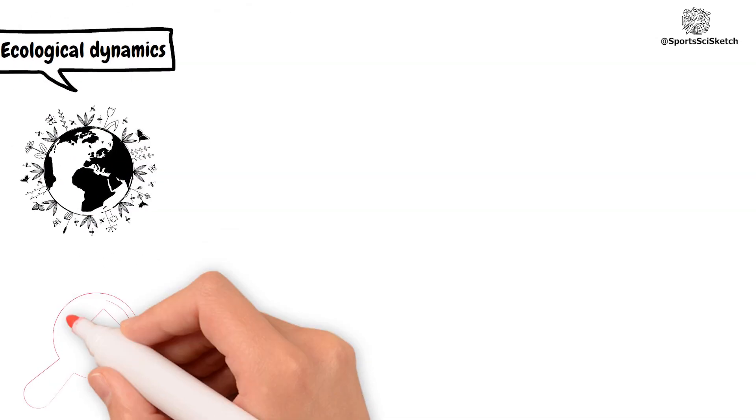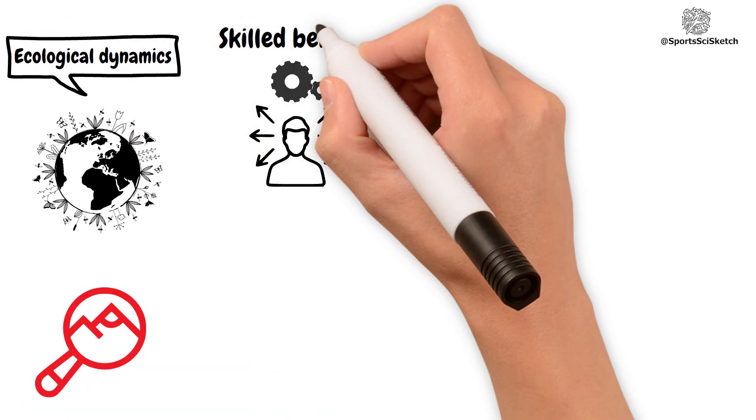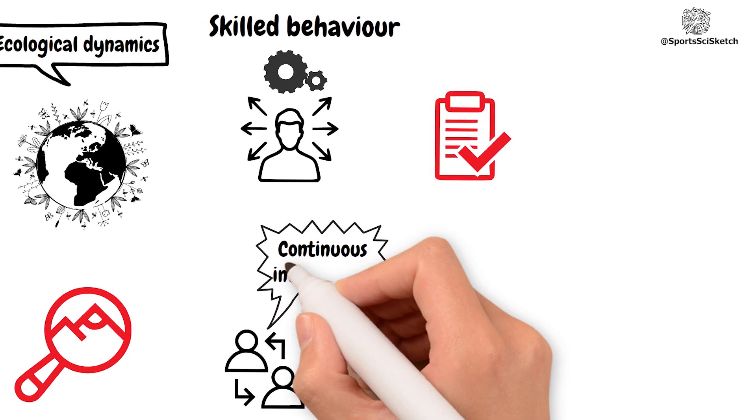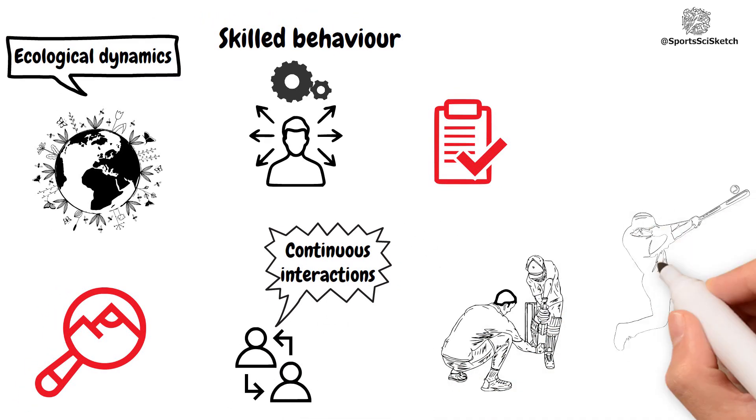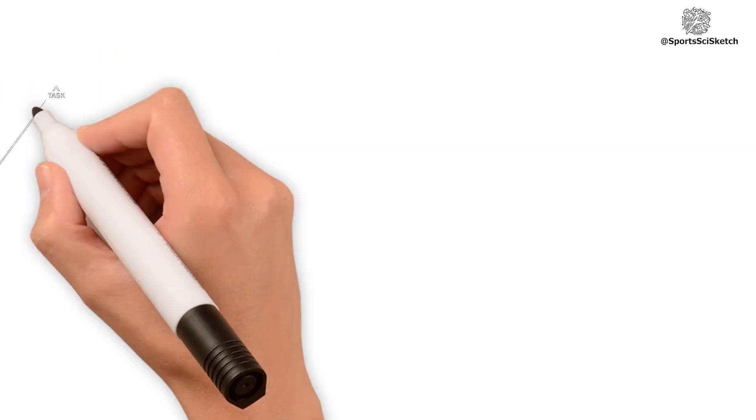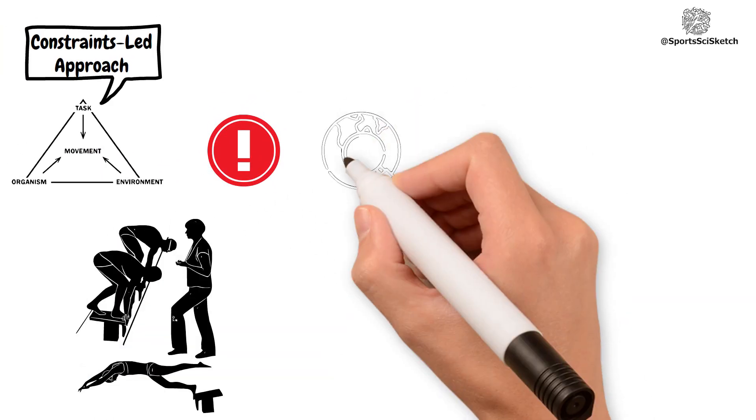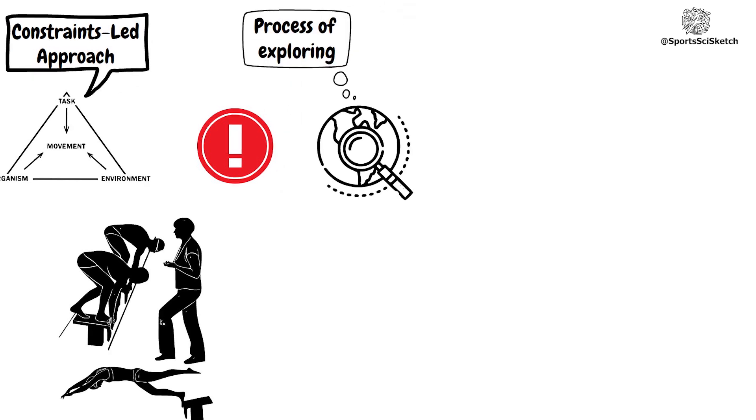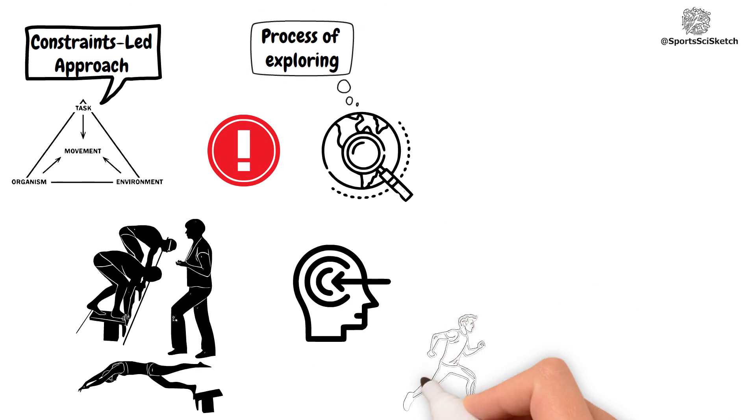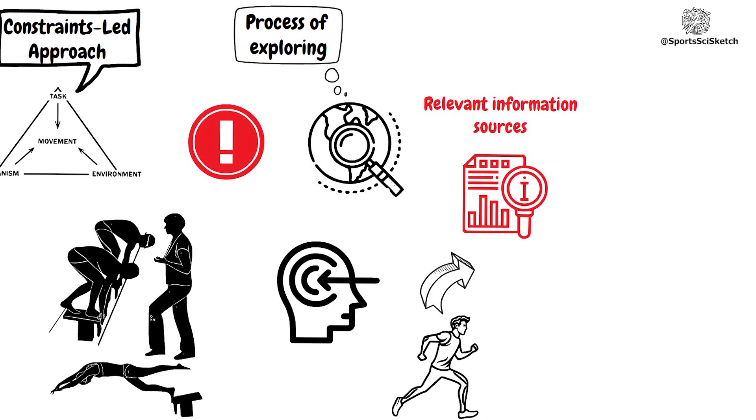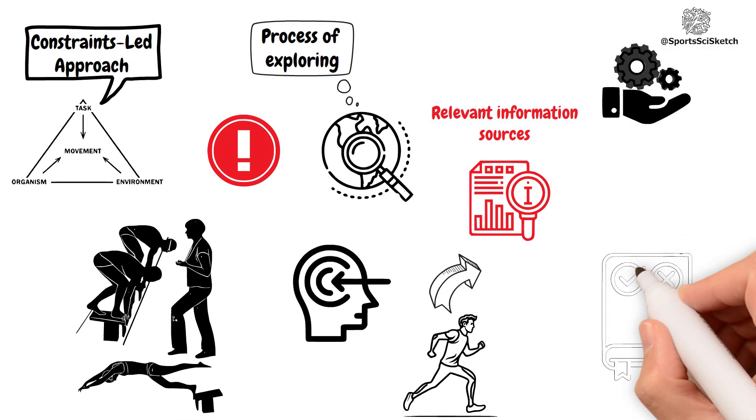From an ecological dynamics perspective, skilled behavior is the result of continuous interactions between the learner and performance environment. The constraints-led approach emphasizes that learning in sport and movement becomes a process of exploring, perceiving and acting on relevant information sources that serve to guide movement.